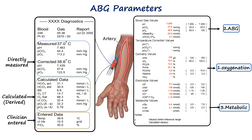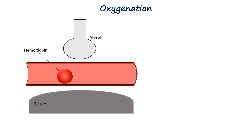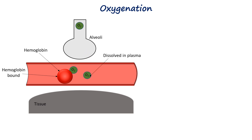In this video, we will be focusing on the oxygenation part. Oxygenation is the process of delivering oxygen to the body's tissues, beginning with pulmonary gas exchange where oxygen moves from the lungs into the bloodstream either binding to hemoglobin or dissolving in plasma. This is followed by oxygen transport through circulation, and ending with tissue perfusion where oxygen is released to meet cellular energy needs.